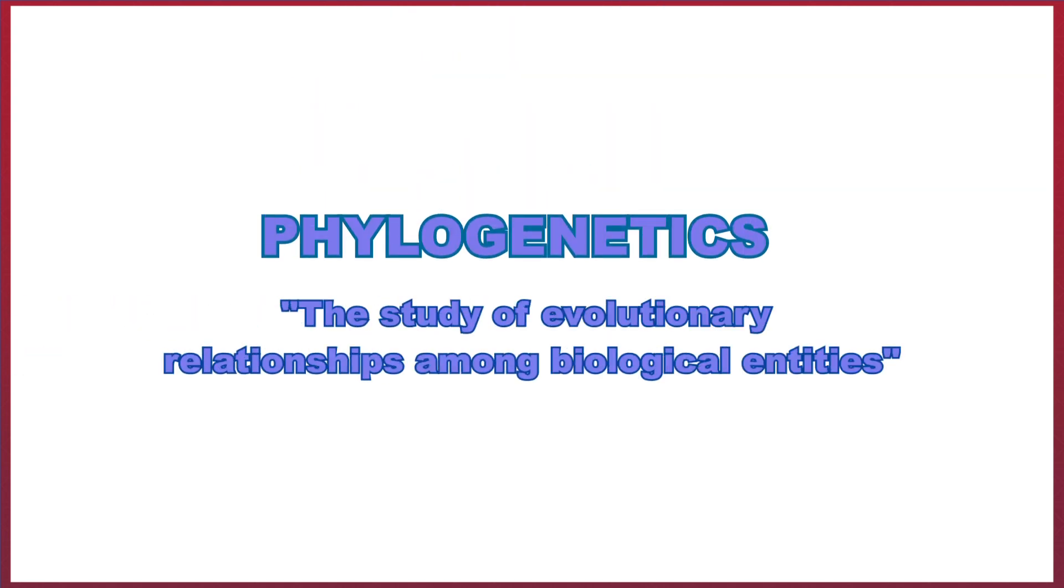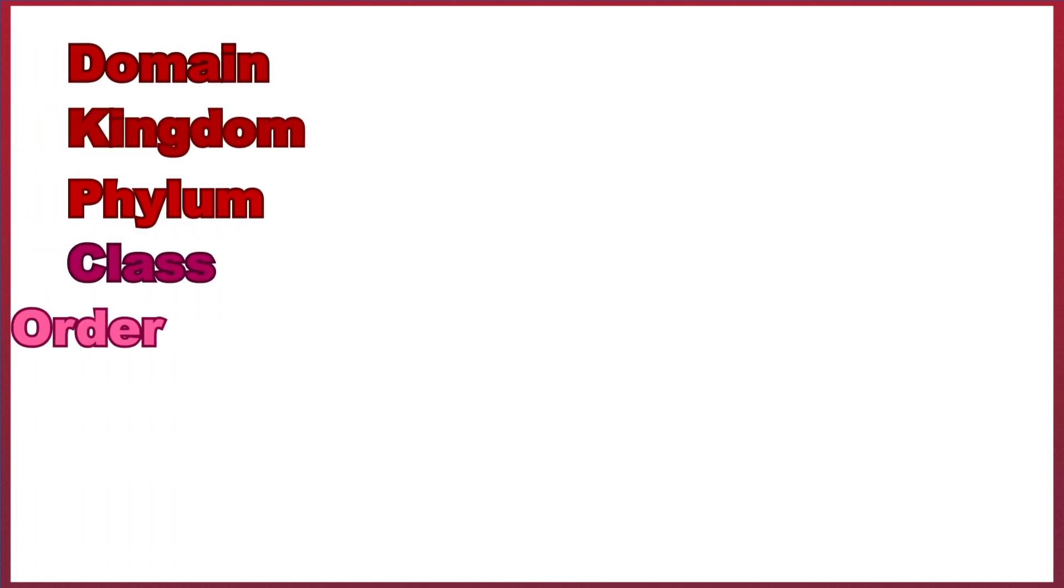Although many would consider fungi as being very similar to plants, genetically they're actually in their own separate phylogenetic group. Phylogenetics is the study of evolutionary relationships between biological organisms, and we can break down these relationships into eight distinct classifications: domains, kingdoms, phylum, class, order, family, genus, and finally, species.